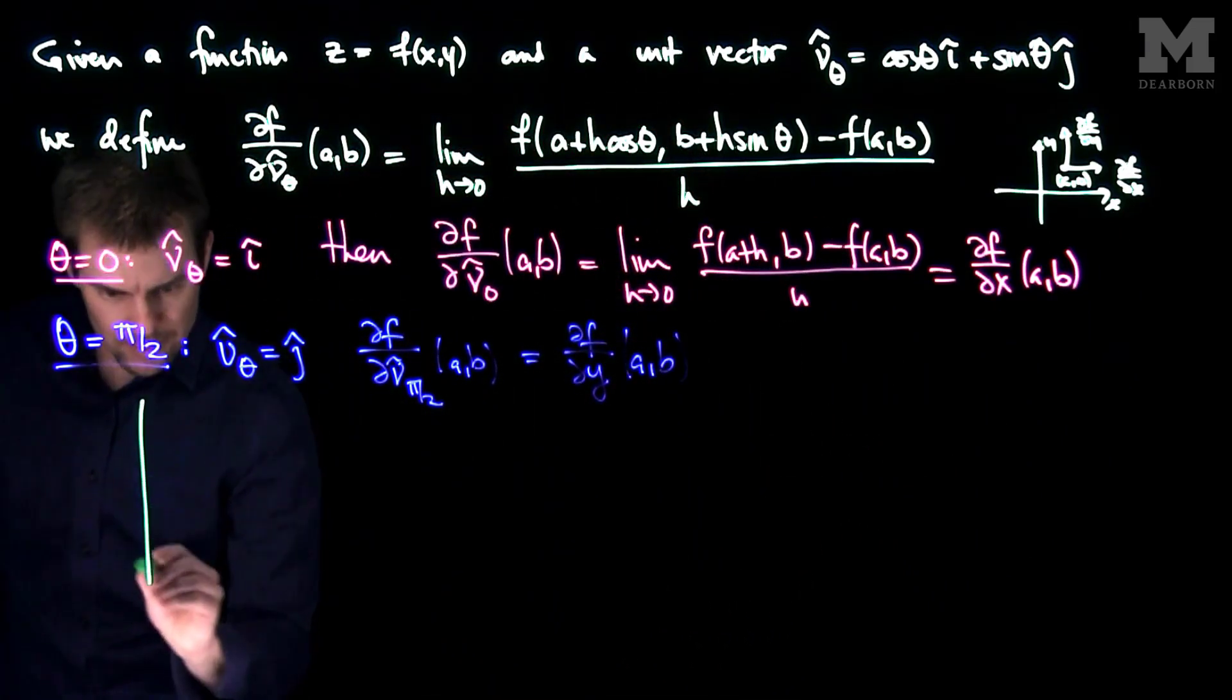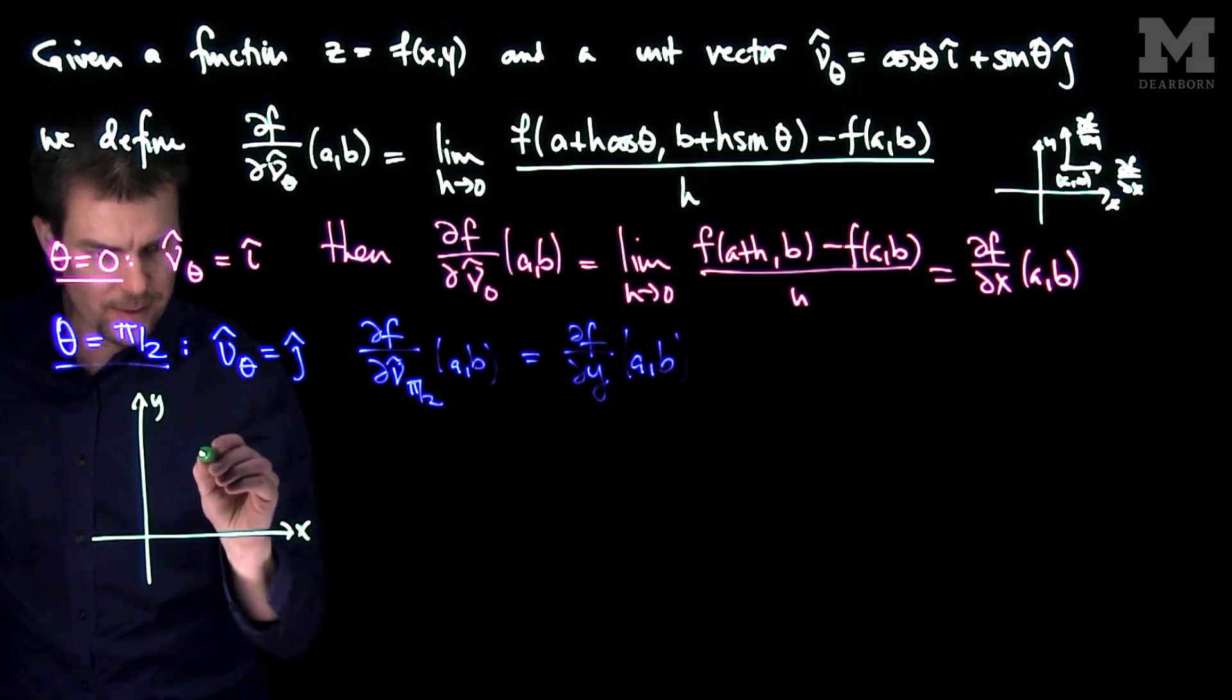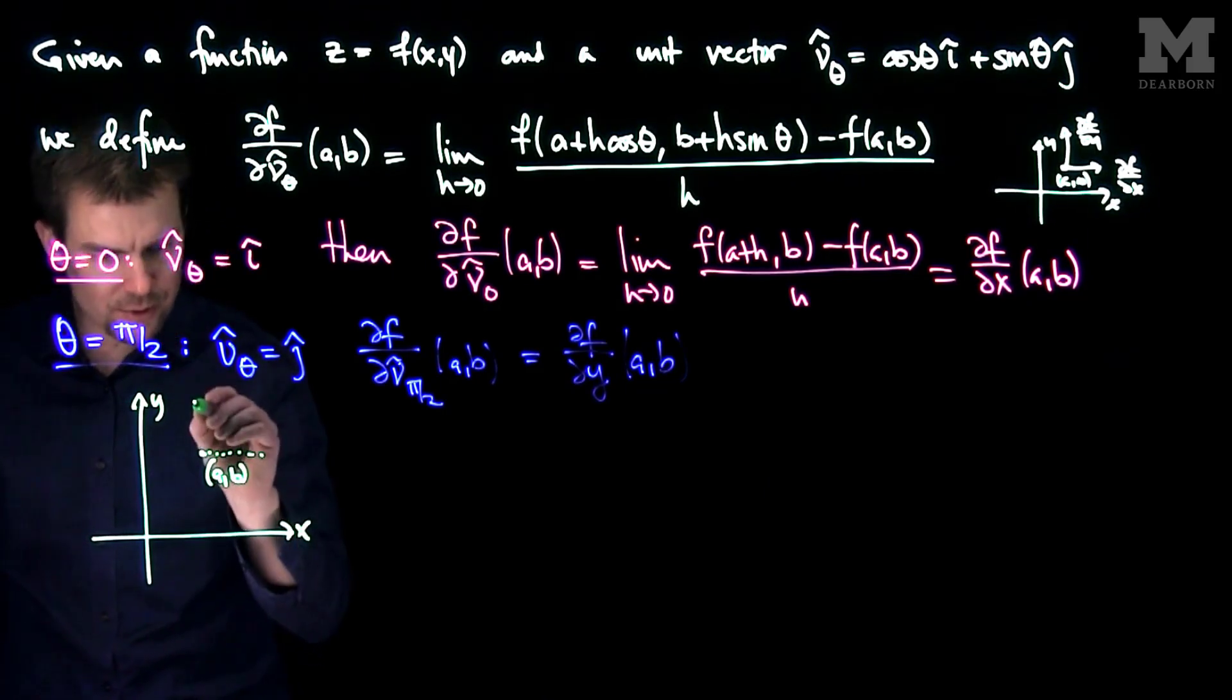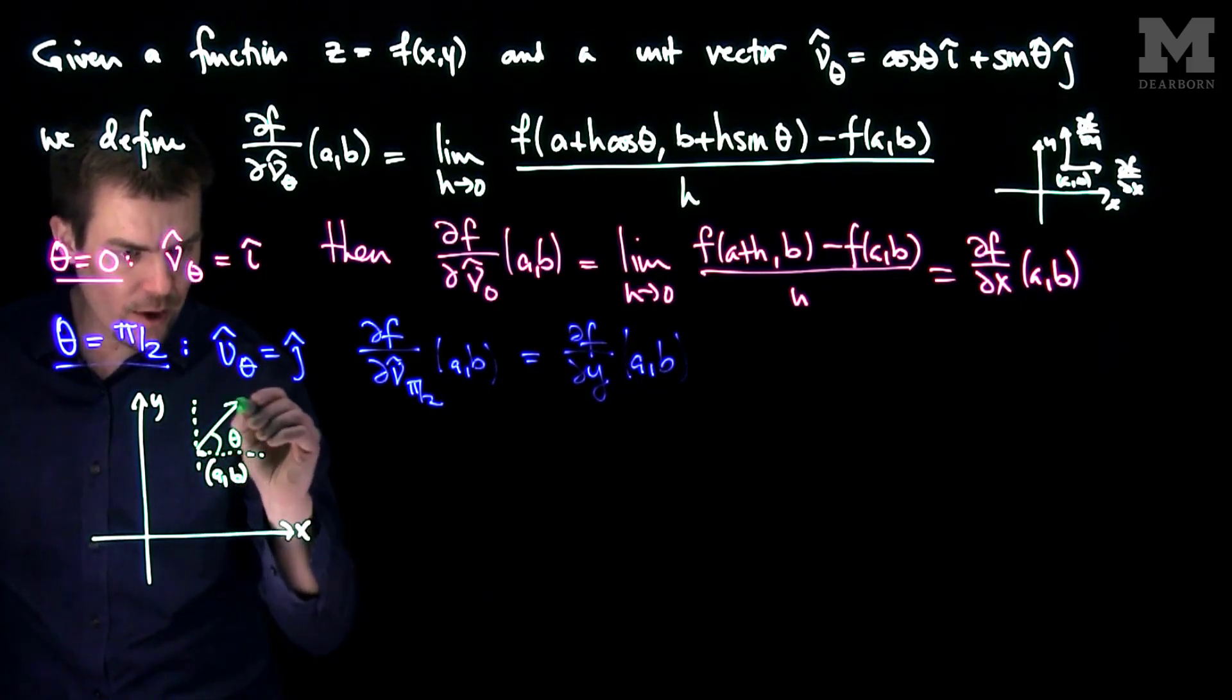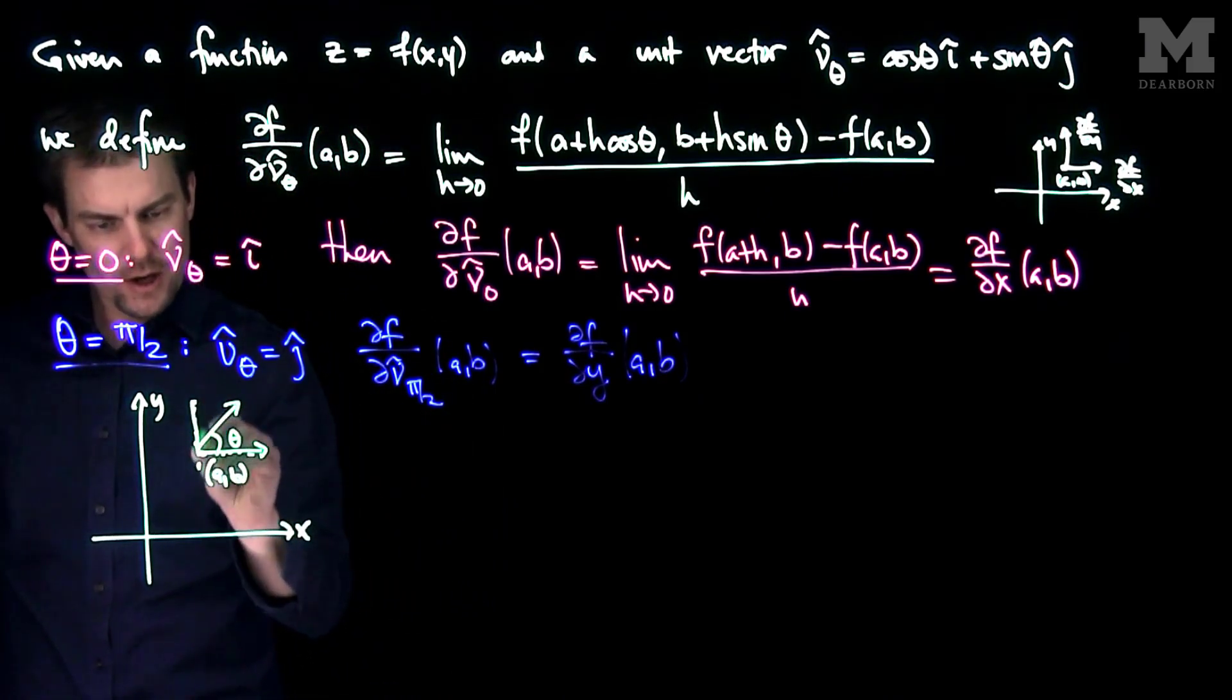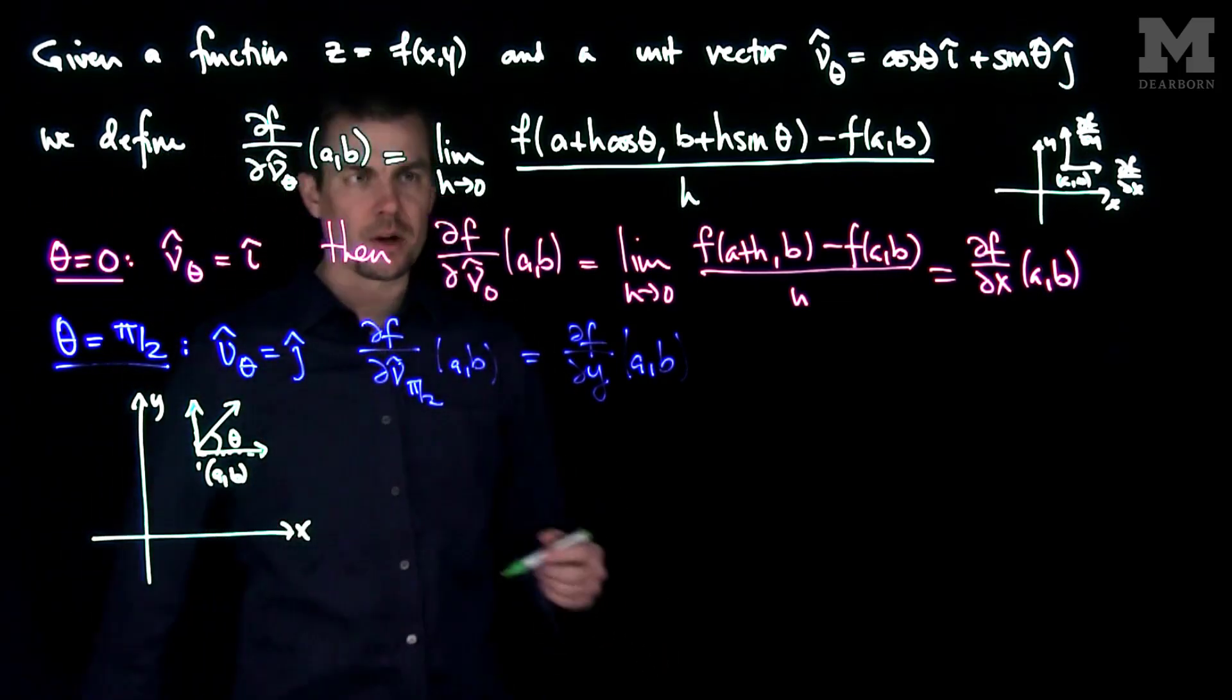So if I look at a point ab in space, x-axis, y-axis, and I'm at a point ab, what I do at this point ab is I draw a little coordinate axis over here, and then I find an angle theta, and I want to know the rate of change in that direction. So of course, just this horizontal direction will be the x-partial derivative, this vertical direction will be the y-partial derivative, but I can find the rate of change in any direction using this formula.